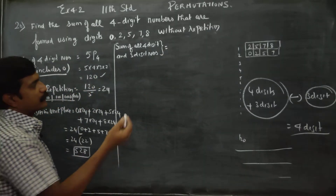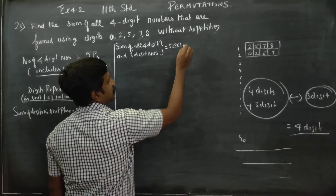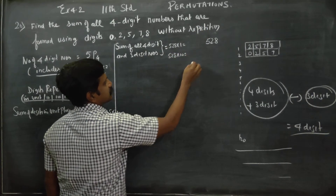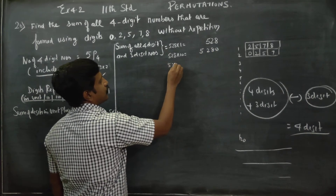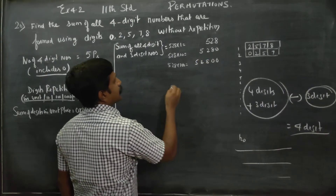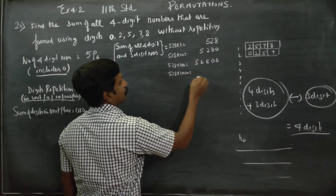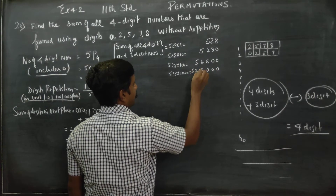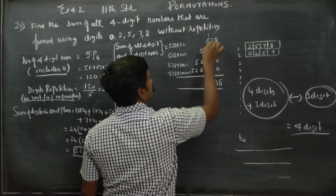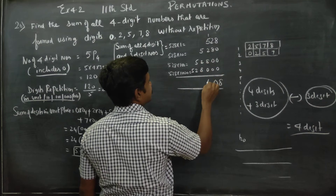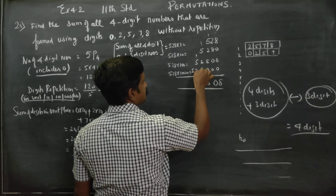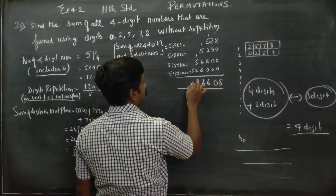Unit place is 528. So: 528 into 1's place equals 528; 528 into 10's place gives 5280; 528 into 100th place gives 52800; 528 into 1000th place for the 4-digit number. Adding these together: the total sum of all 4-digit and 3-digit numbers combined is 586608.